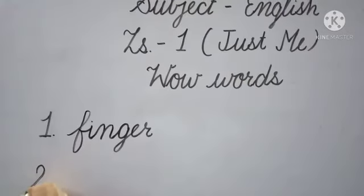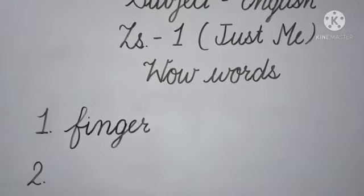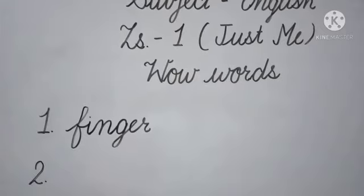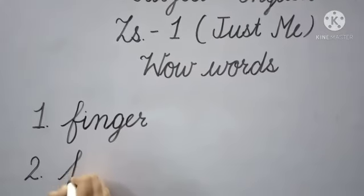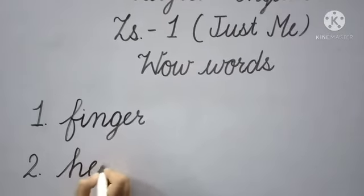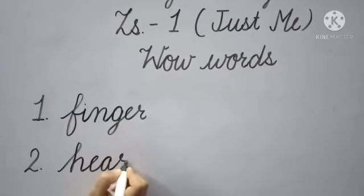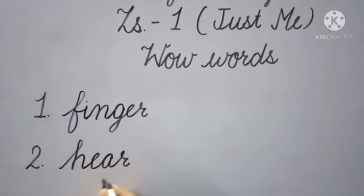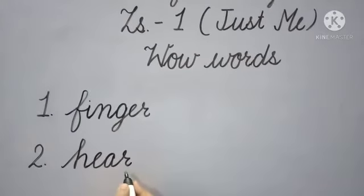Next, number 2: 'here'. What is the spelling of here? H-E-A-R, here. Here means 'sunna' (to hear/listen).